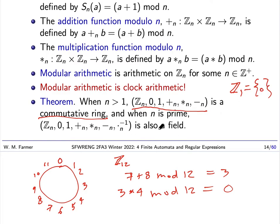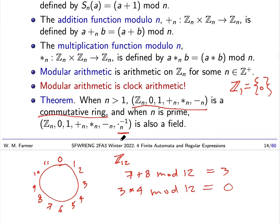What's very interesting is if n is prime, then the same structure is also a field. A field has the property, in addition to the ring properties, that there are multiplicative inverses. So there is a multiplicative inverse operation.